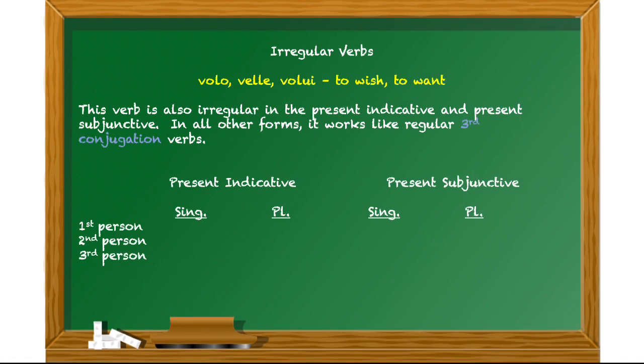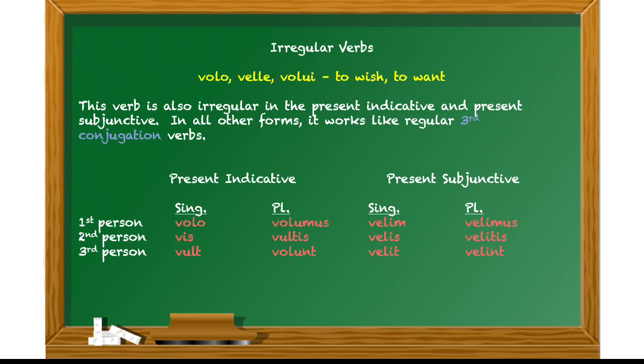So go ahead and set up your chart here with the present indicative and present subjunctive side. Of course, we've got our singular and plural columns underneath. And then here come the actual Latin forms. And as you copy these, you can see that they're irregular, right? There's nothing that you can drop or add from the dictionary entries really to get these forms. In the indicative, you have volo, then vis, it's got an I in it, then vult with a U. Then on the plural side, volumus, vultis, and volunt. So clearly irregular.